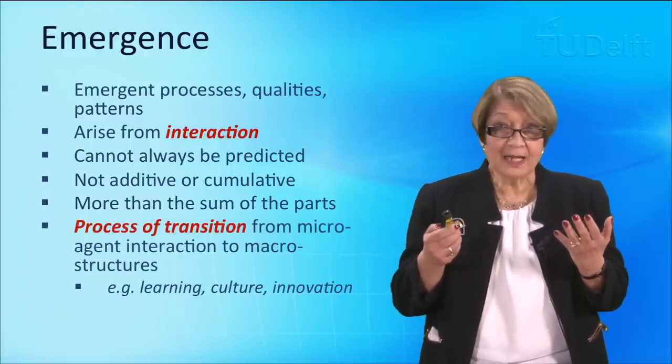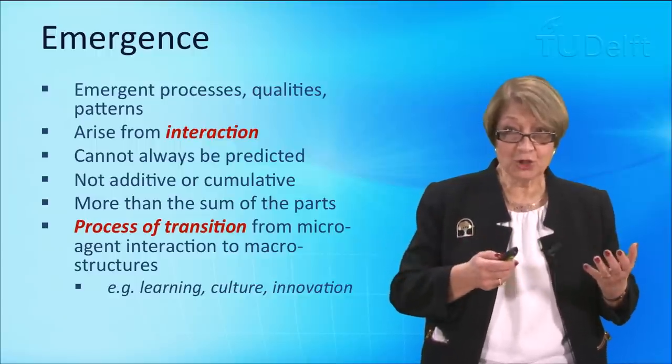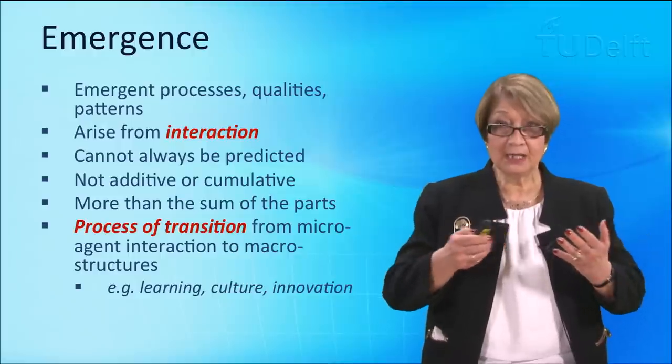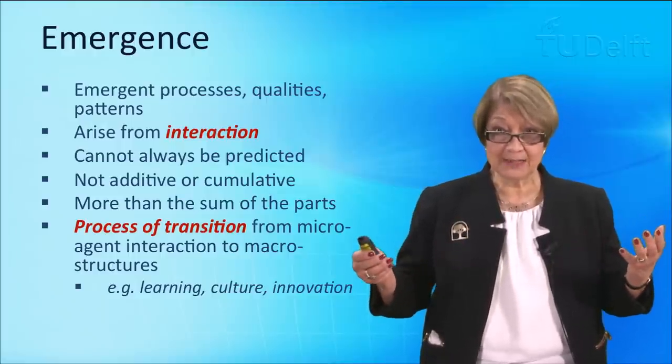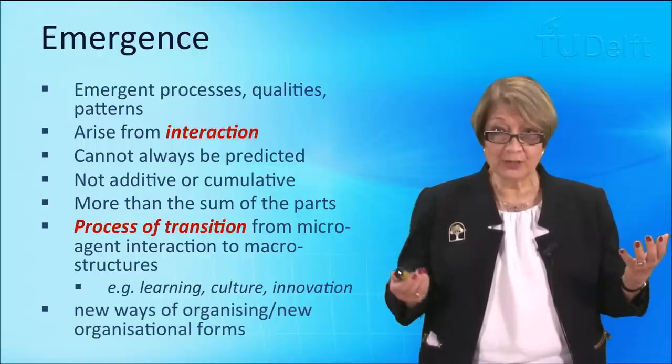So, what that means is that emergence is a systemic property. It is a property of the system working together, interacting together to create the emergent property. And it's not additive or cumulative. In other words, it's more than the sum of the parts. It is also a process of transition from micro-agent interaction to macro-structures. The macro-structures are the emergent processes, qualities, patterns. Learning, culture, innovation are all emergent processes.